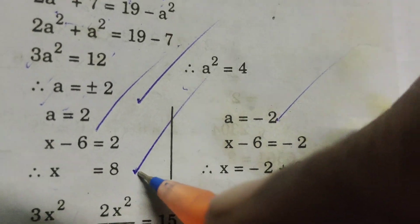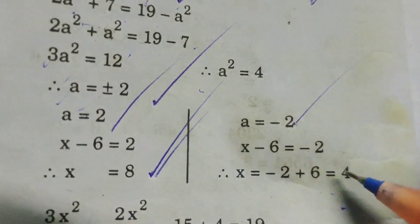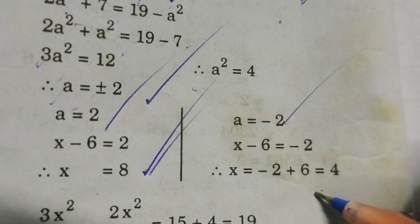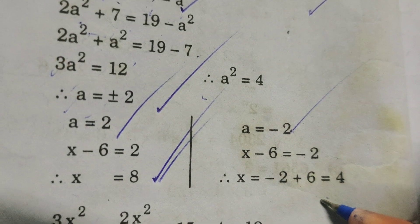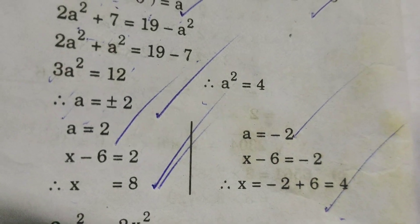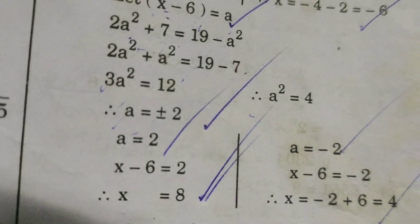That is x equals to 4. So x equals to 8 and x equals to 4. Thank you.